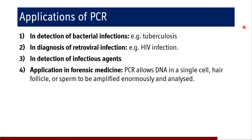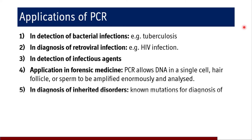Specifically, in DNA fingerprinting, PCR allows DNA in a single cell, hair follicle, or sperm to be amplified enormously, and that is used for identification of a criminal.